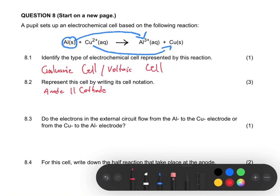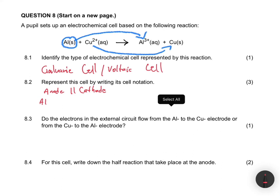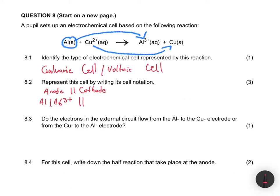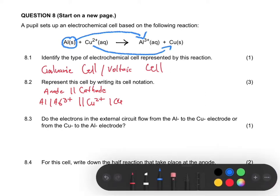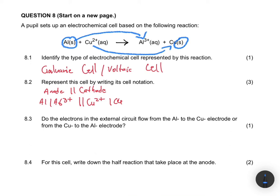At the anode we have aluminium, and at the cathode we have copper. So our standard cell notation becomes: Al | Al³⁺ || Cu²⁺ | Cu. You can also add states — copper here is a solid — but to avoid unnecessary mistakes, leave it as is and you will get full marks.